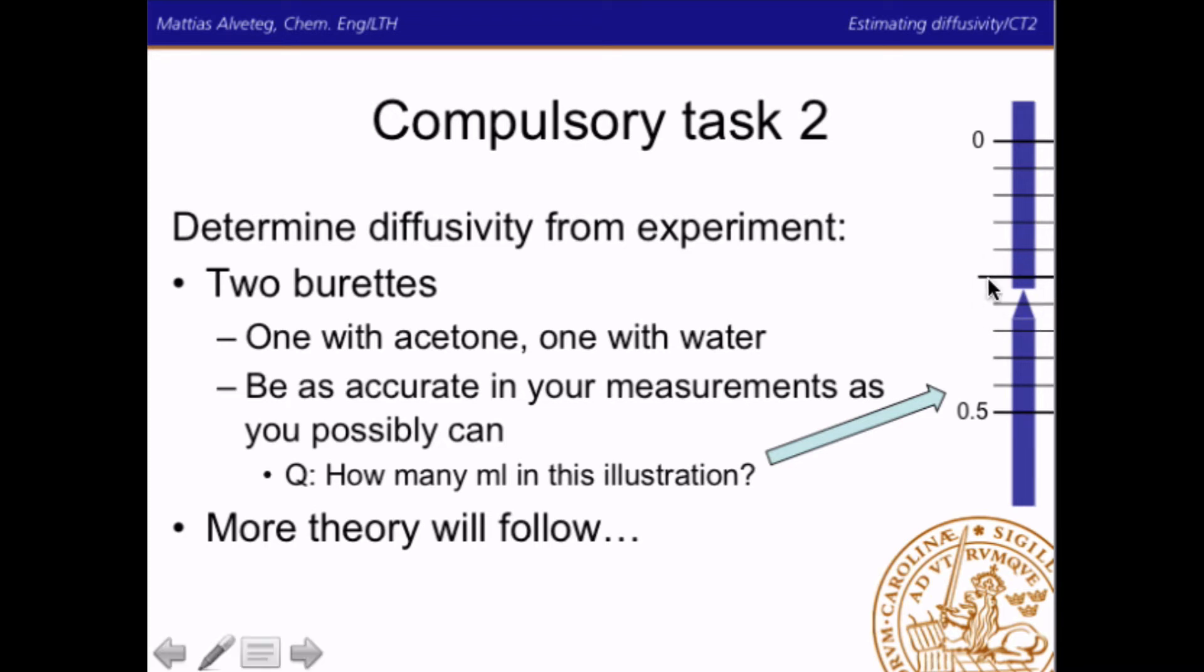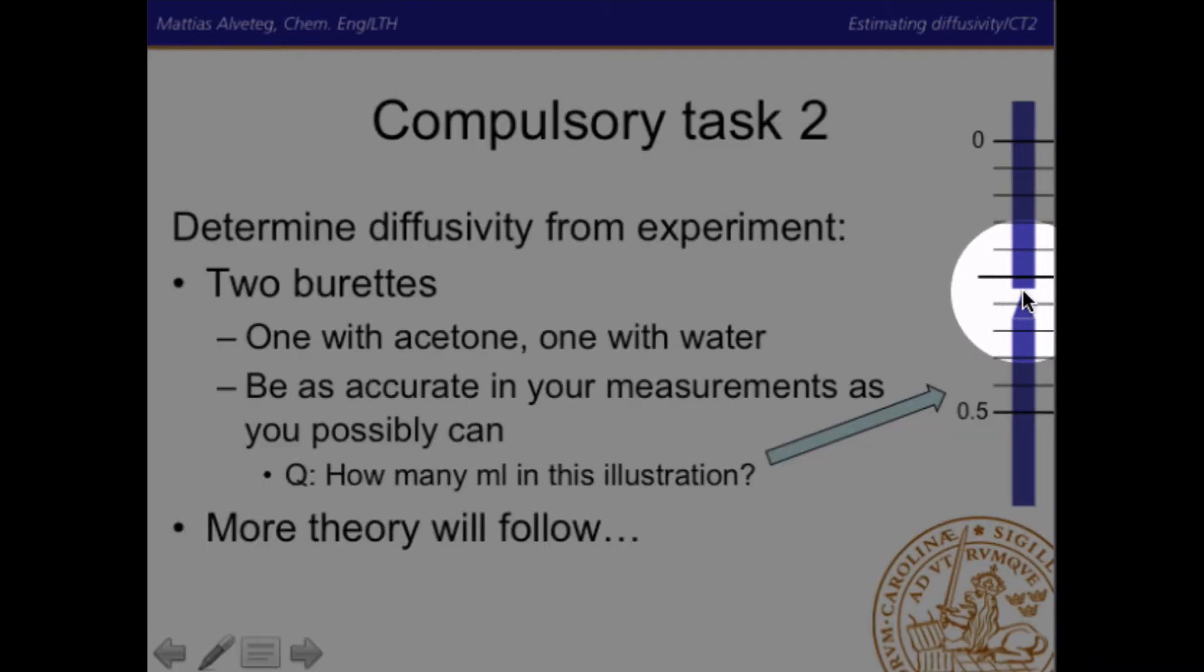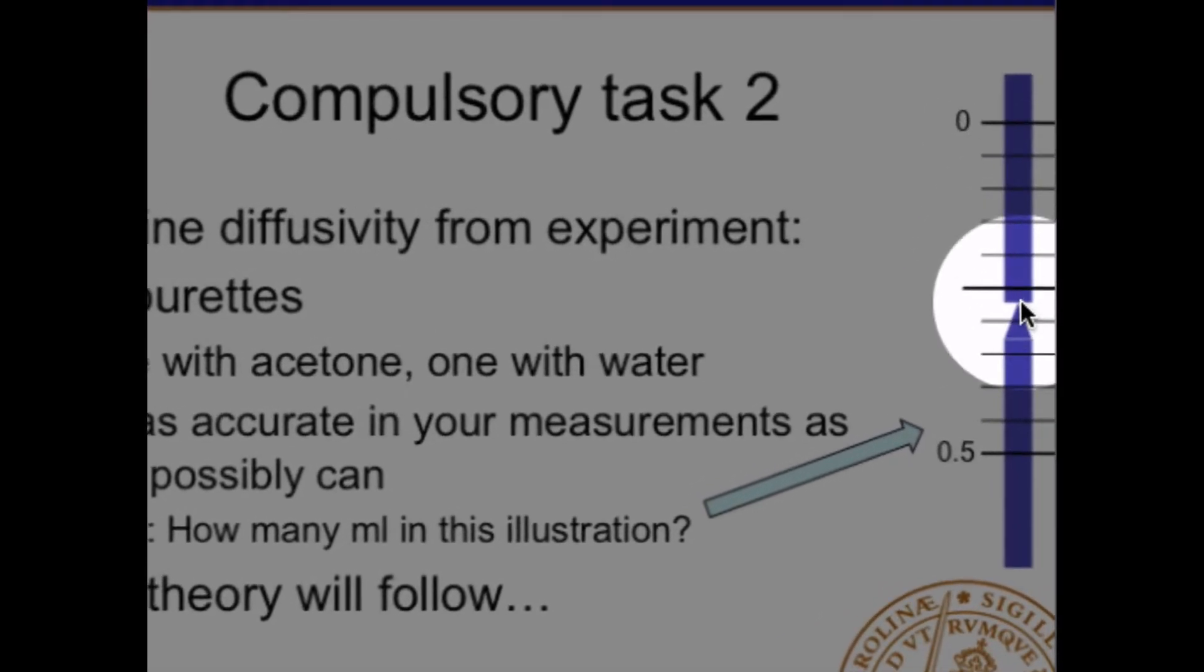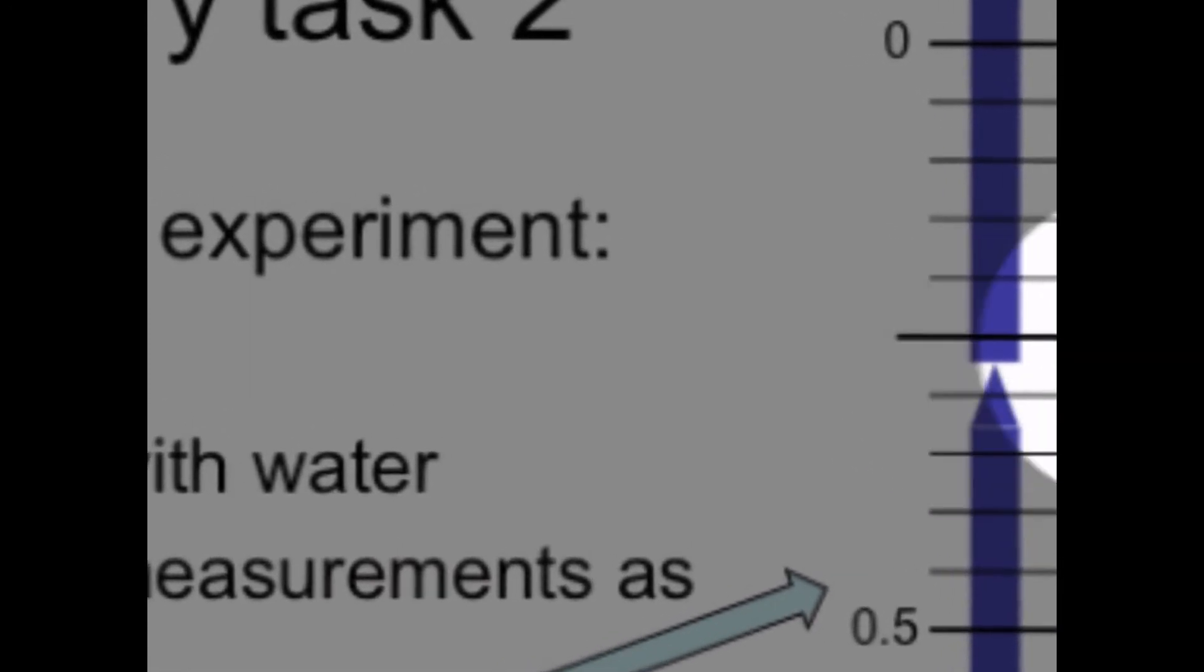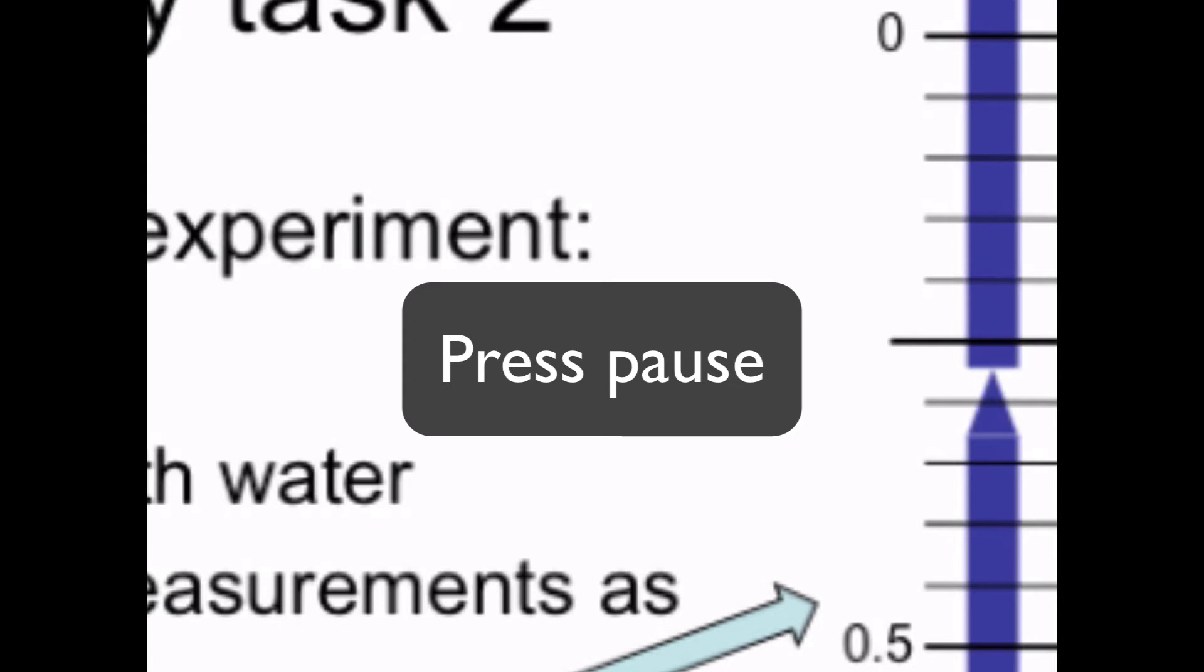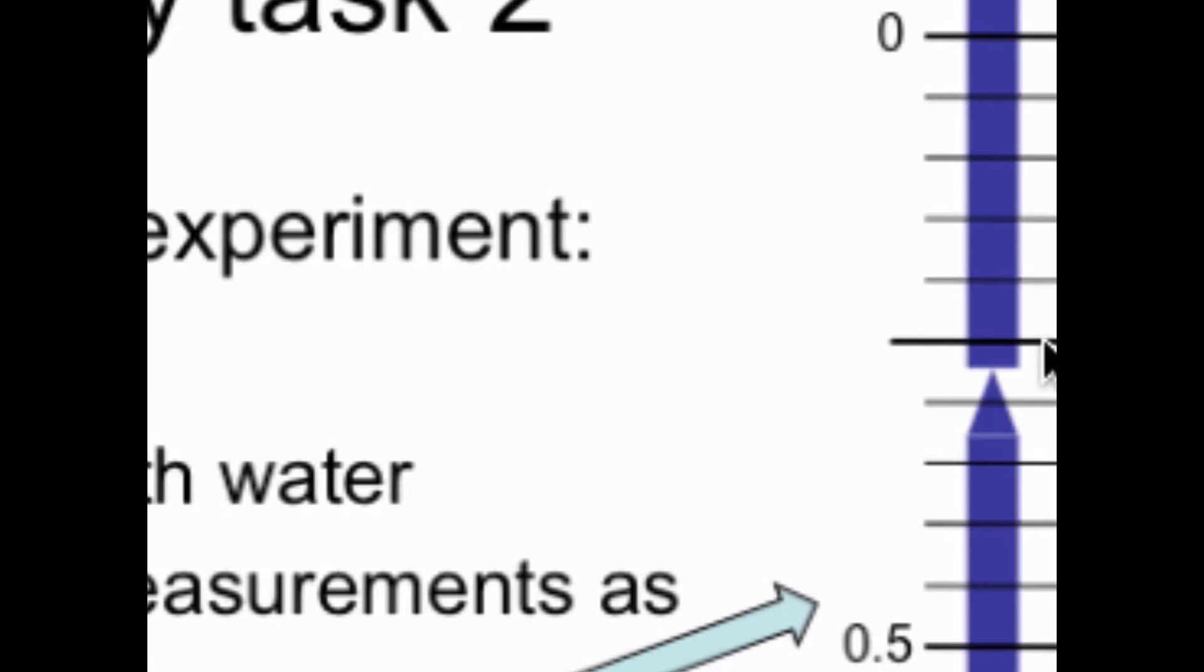Note here that if you have a transparent liquid surface, you get this meniscus, and that's working as a lens. So, the blue line here at the back of the burette turns into an arrow, and you should read it there. So, how many milliliters? Well, this is 0.25. So, this must be 0.3. But I wouldn't be pleased if you said 0.25 or 0.3 here. I want you to be more exact. So, I would say 0.27 here would be a rather good measurement.